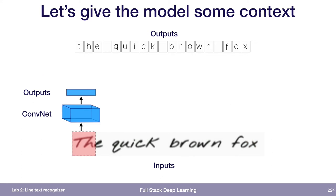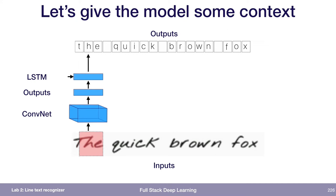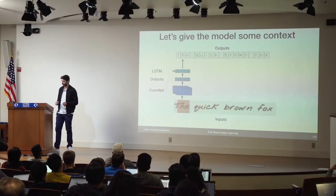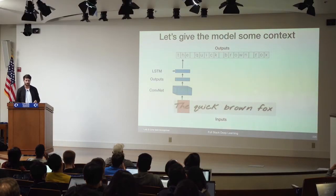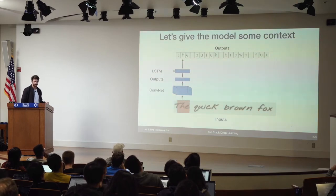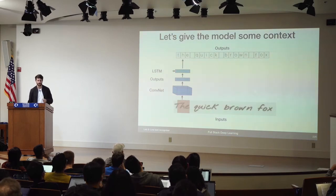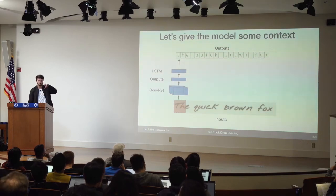Another thing that could be helpful is giving the model some context. If the model knows the previous prediction was T, it can know the next character to predict in the current window is H. So we put an LSTM on top of the conv net fully-connected stack, which allows the model to look at its own previous predictions and use those as context to make its next predictions.